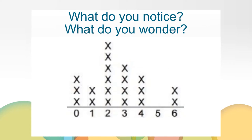You may be wondering what those x's mean or represent. Each x represents one student. How does this change your interpretation of the image? You might be thinking that since each x represents a data point, this might be a line plot. What do you think this line plot might represent?